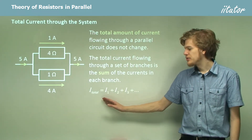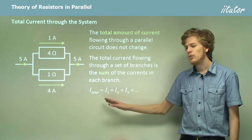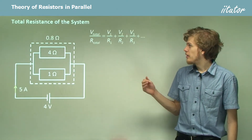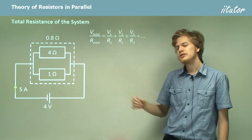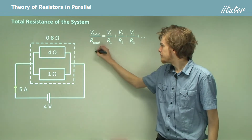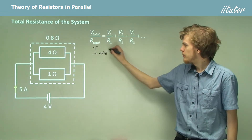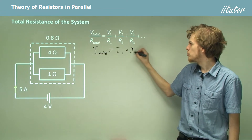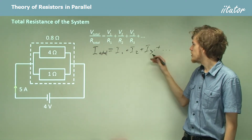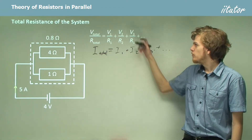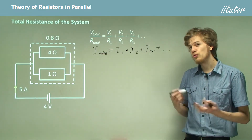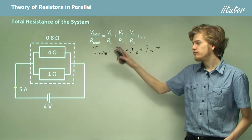I total equals the sum of the current in each branch: I1 plus I2 plus I3 and so on. From Ohm's law, the total voltage over the total resistance equals the total current. In a parallel circuit this equals I1 plus I2 plus I3, so we can substitute in V1/R1, V2/R2, V3/R3 and so on, all according to Ohm's law. So this equation follows from the previous one.